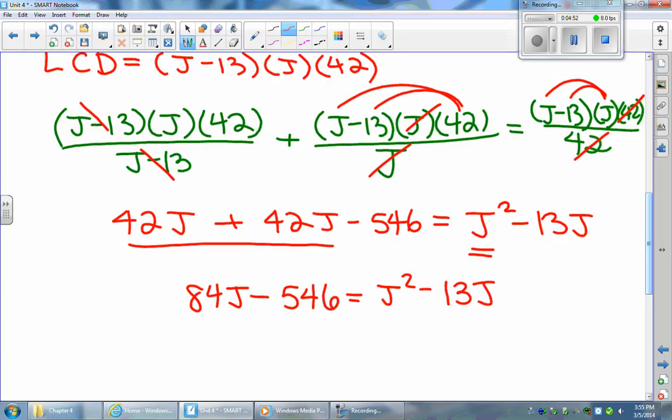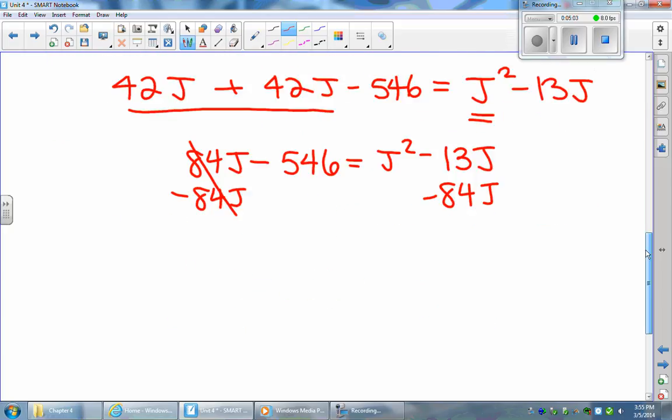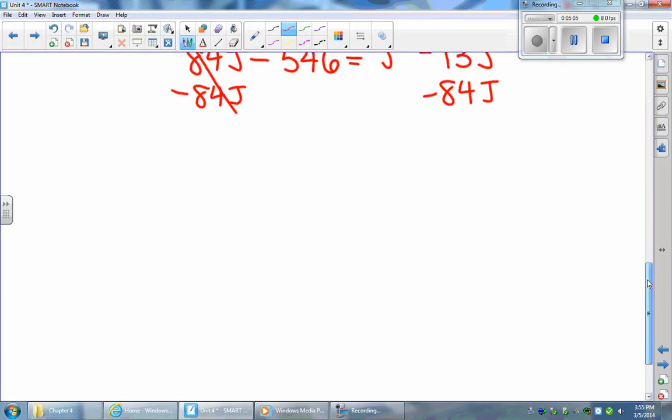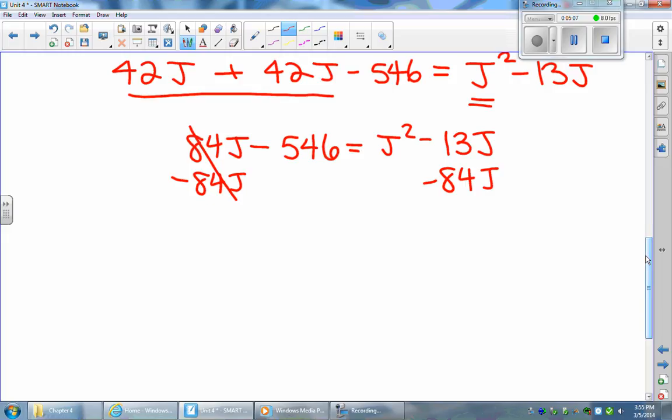And now I'm going to bring my terms to the other side of the equation. So I'm going to subtract 84j from both sides so that I'm left with zero j on the left and I'm left with negative 97j on the right.